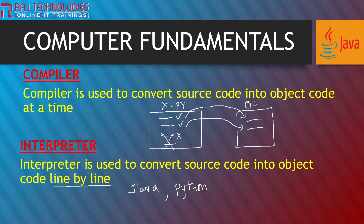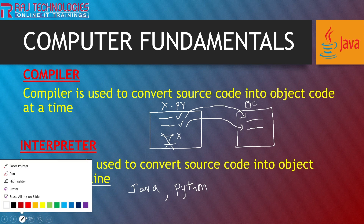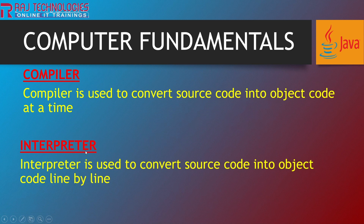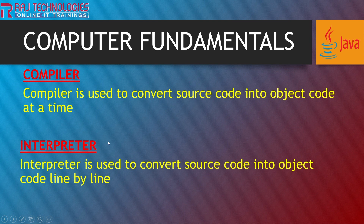This is a very very important interview question — the difference between compiler and interpreter. Compiler converts source code into object code at a time, whereas interpreter does it line by line. So remember: compiler is at a time, interpreter is line by line. This is a very very important interview question.